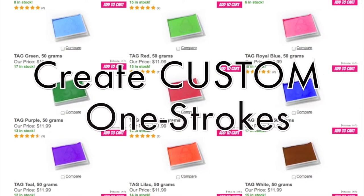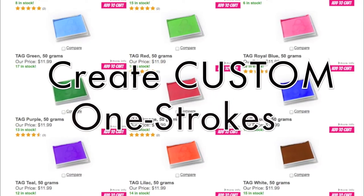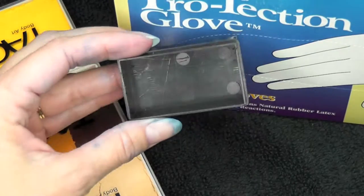Hey everyone! Today we're going to learn how to make custom one-strokes and rainbow cakes from Tag 50-gram solid containers.